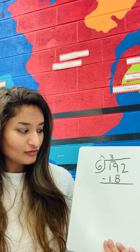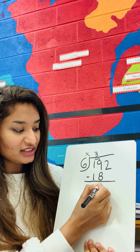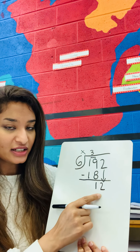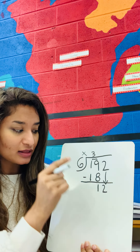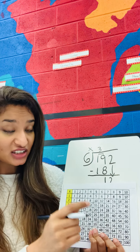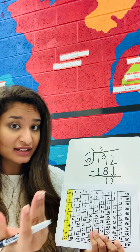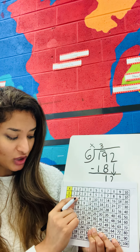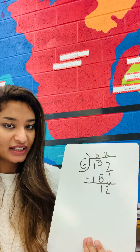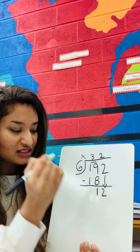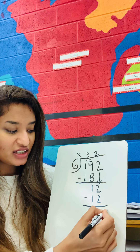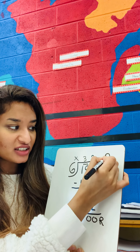I needed three sixes to make 18, so I subtract: nine take away eight gives me one. I'm not done — I bring the two down to make 12. Now I divide 12 by six. Looking at the six times table: six, twelve — how many sixes give me 12? Two sixes. I write two at the top and multiply: two times six gives me 12. I'm left with nothing, so the remainder is zero and the quotient is 32.